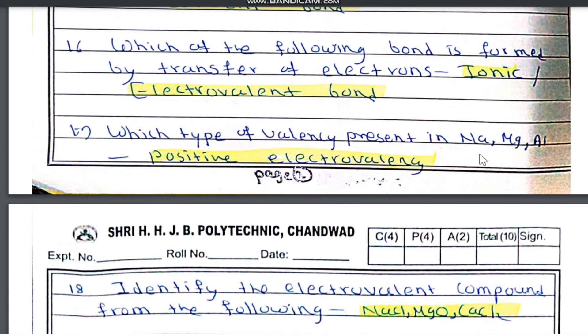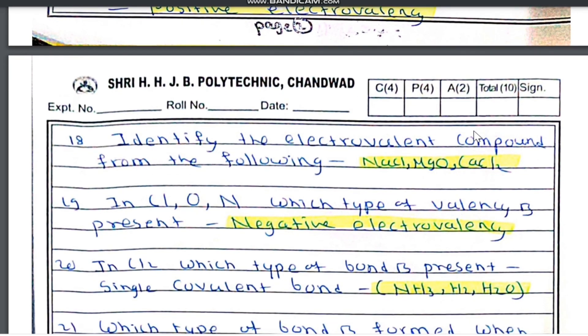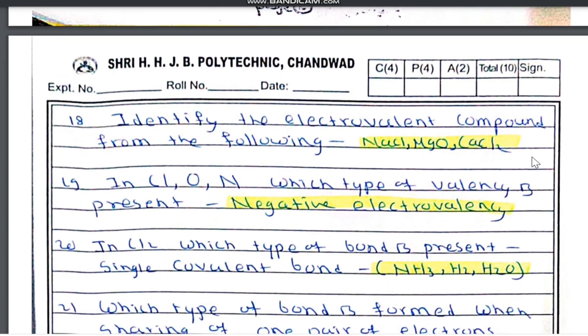Which type of valency is present in sodium, magnesium, and aluminum? It is positive electrovalency, meaning they lose electrons. The electrovalent compounds are NaCl, MgO, and CaCl2. In chlorine, oxygen, and nitrogen, negative electrovalency is present — they gain electrons.